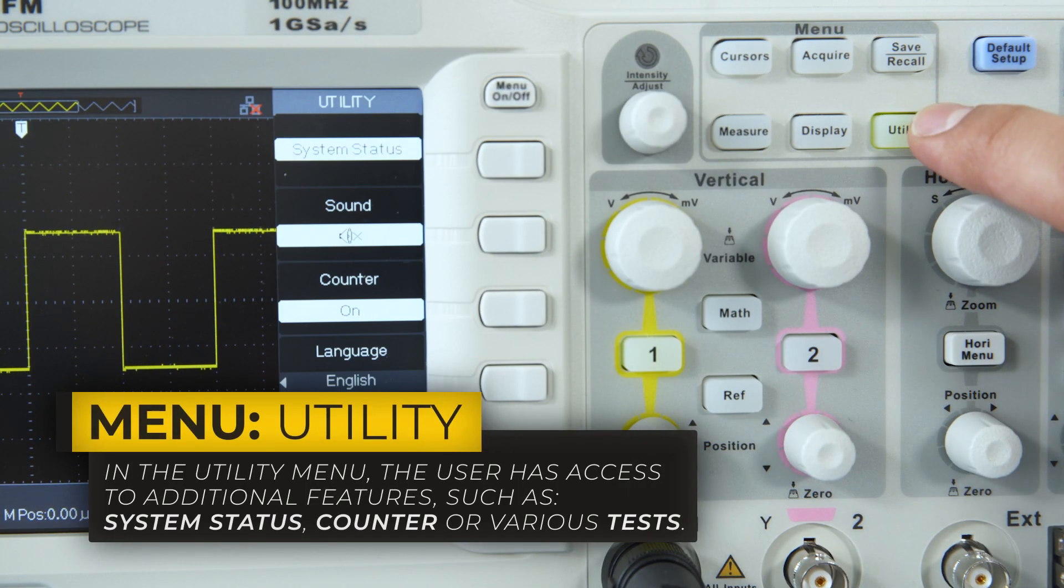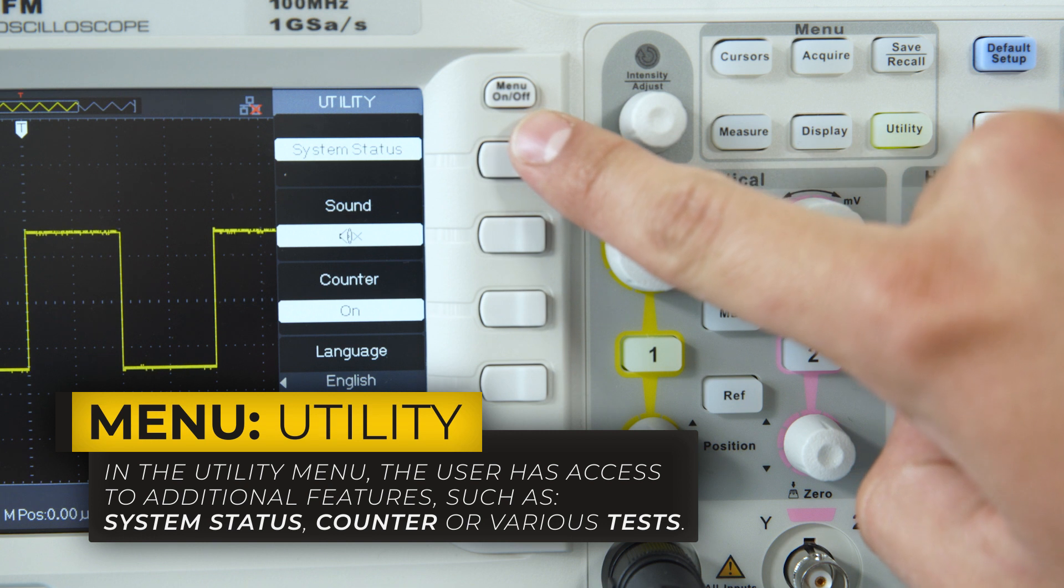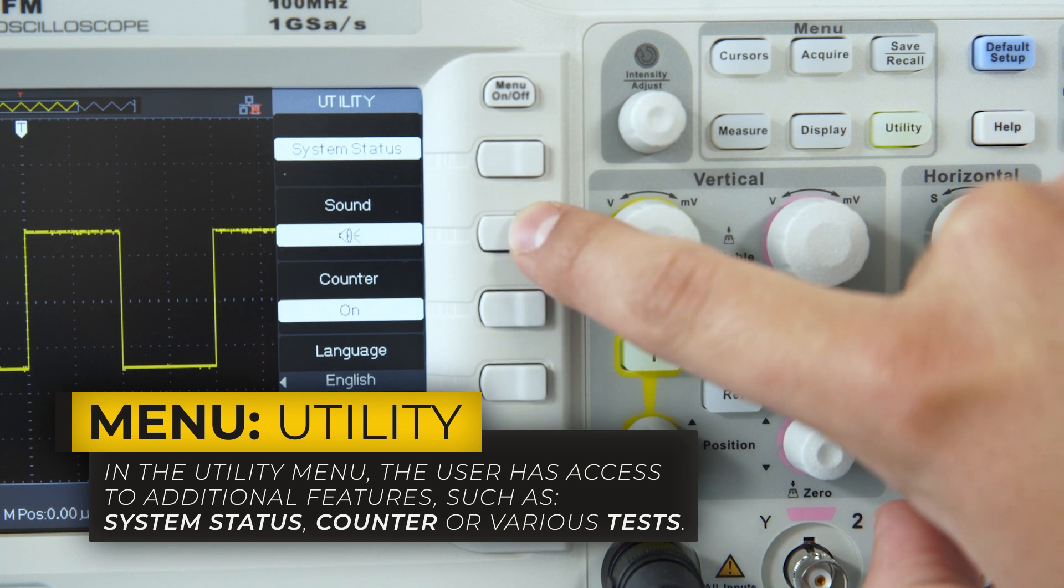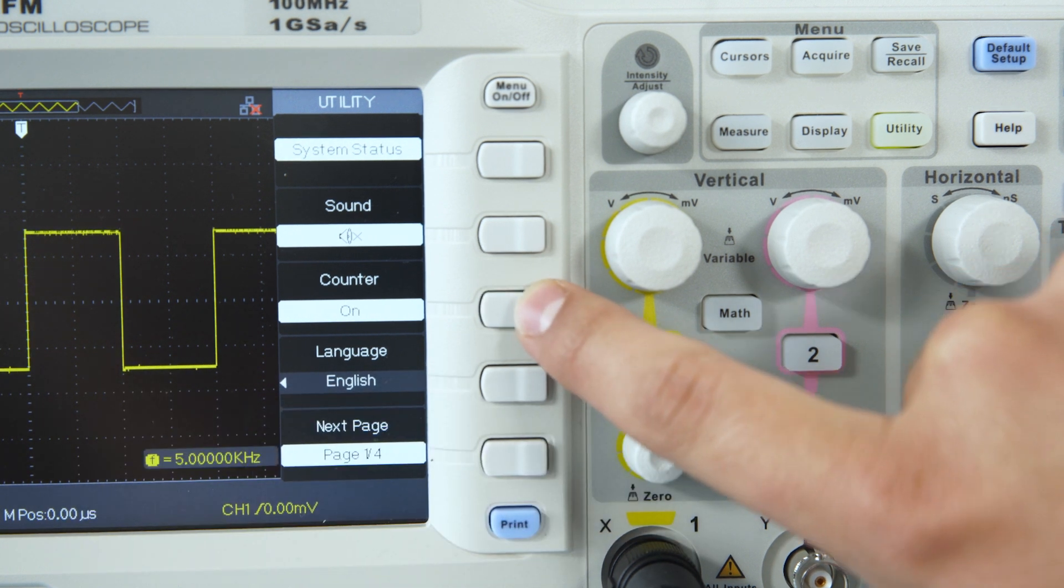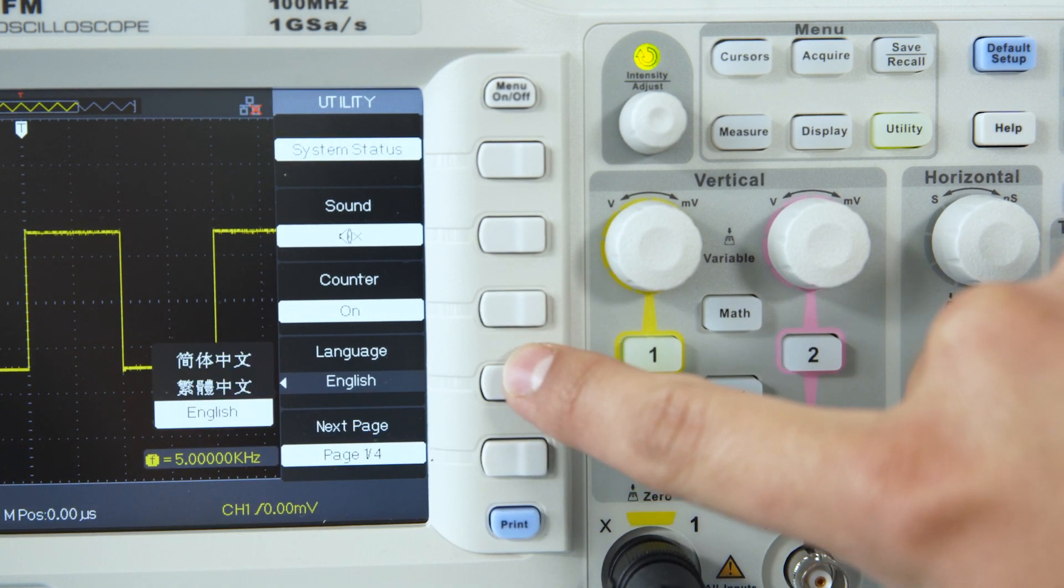In the Utility menu, the user has access to System Status, turn on and off the beeping sound or the counter, and select a preferred language.